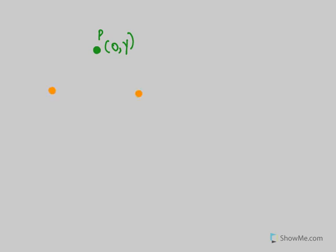So this is point P at (0, y). Point A is (5, -2) and point B is (-3, 2). The points are equidistant, which means the distance PB equals PA. Let us start by finding PA.